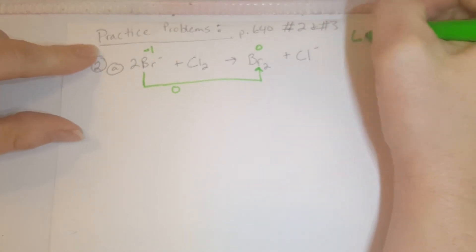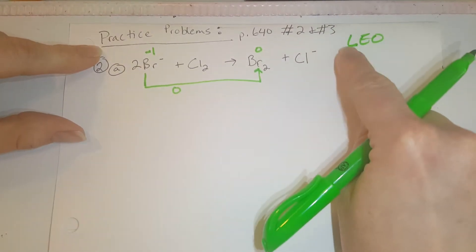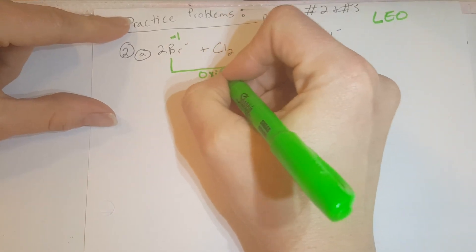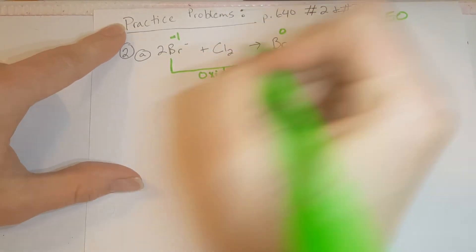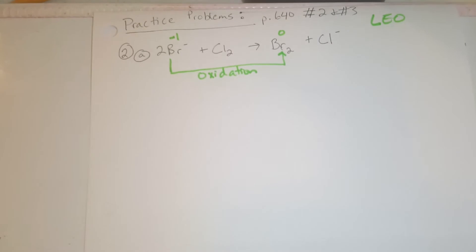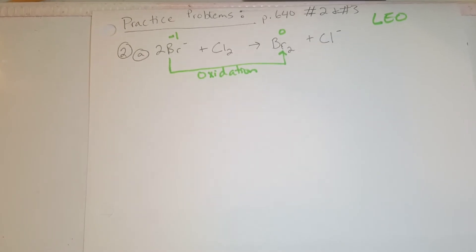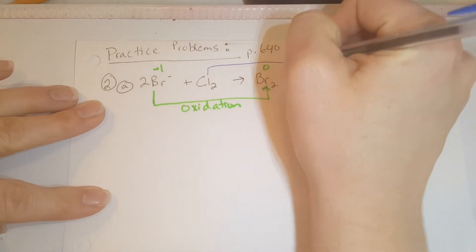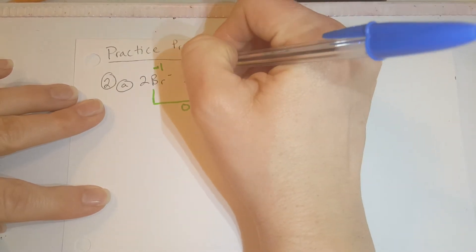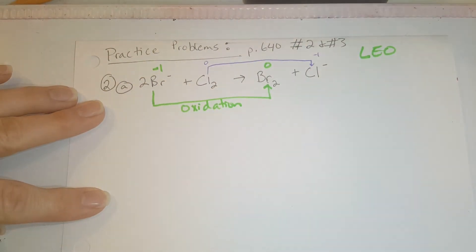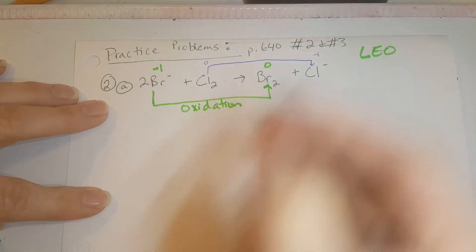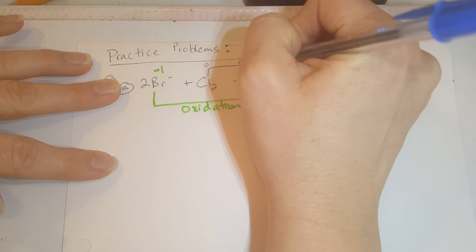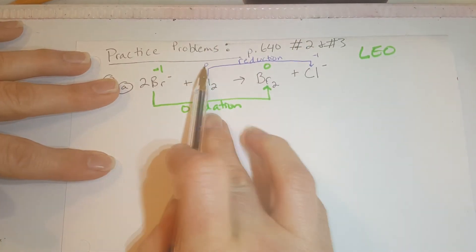Bromine went from negative one to zero, so it lost electrons — and losing electrons is oxidation. Then our chlorine was neutral or zero and now it's negative one, so it is gaining electrons, which is reduction because it's reducing from zero to negative one.